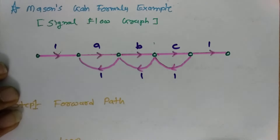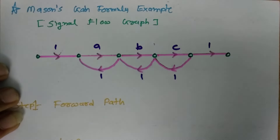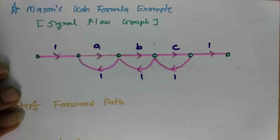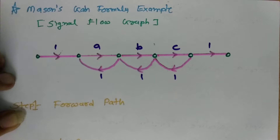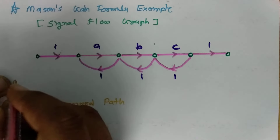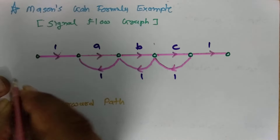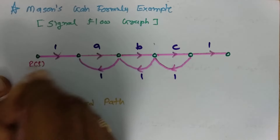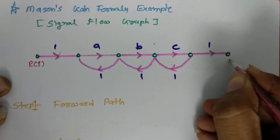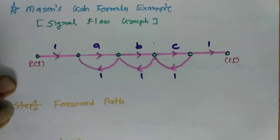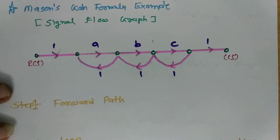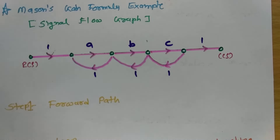In this session, I will calculate one more example based on Mason's Gain Formula for the solution of a signal flow graph — specifically, the calculation of the transfer function where input is R(s) and output is C(s). We will be solving this example using Mason's Gain Formula.